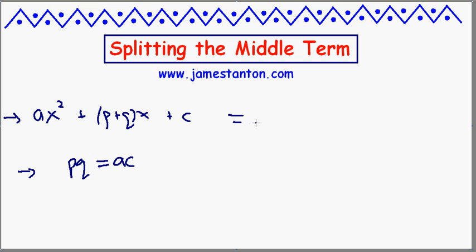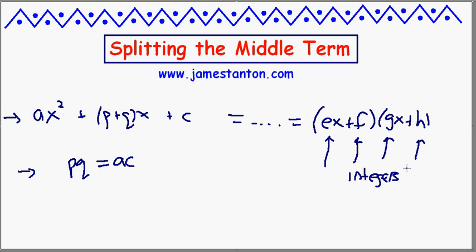prove that after a little bit of algebra, good luck, that in the end this becomes something of the ilk ex plus f, gx plus h, where these numbers are guaranteed to be integers. That's the zinger.